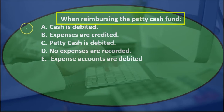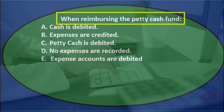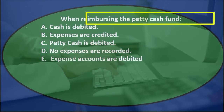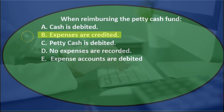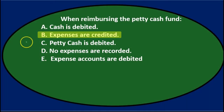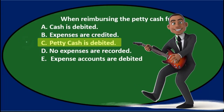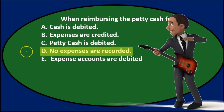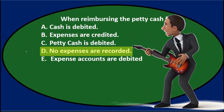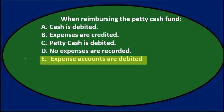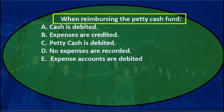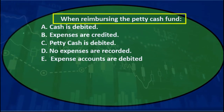Next question. When reimbursing the petty cash fund: A cash is debited, B expenses are credited, C petty cash is debited, D no expenses are recorded, or E expense accounts are debited. We'll read through it and see if we can cross some of these items off.